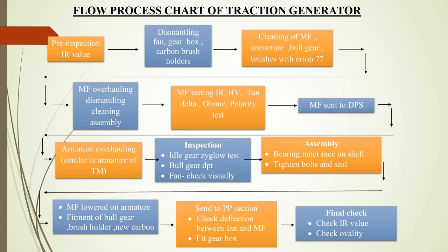The bull gear, magnet frame, top housing, and top cover are also removed. Thereafter, cleaning of the magnet frame, bull gear, and armature is all done using Orion 77. The magnet frame and armature are then sent to the Traction Machine Shop. Moving on to magnet frame overhauling, the basic steps that occur here are dismantling, cleaning, repairs, and assembly — all being similar to that of the Traction Motor.